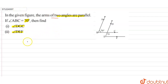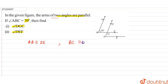Since the arms of the two angles are parallel, AB is parallel to DE, and the other arm BC is parallel to EF. It is also given that angle ABC is equal to 70 degrees. The first part asks us to find angle DGC.